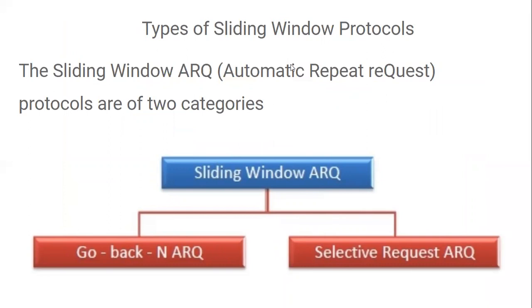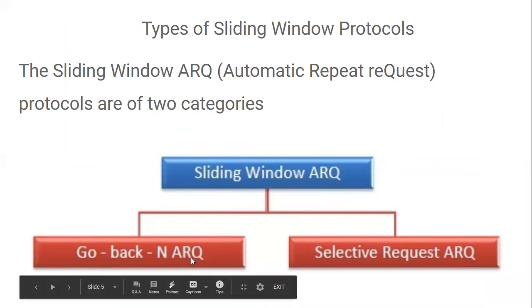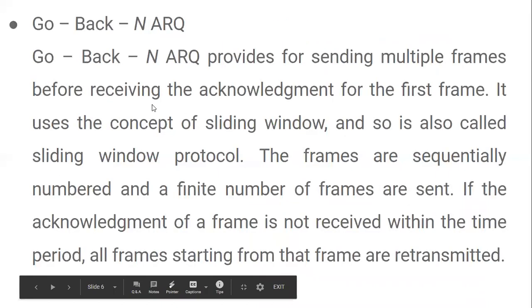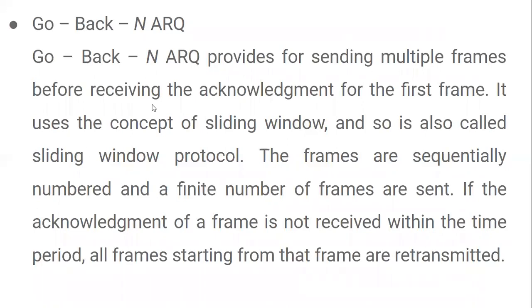There are two types of sliding window protocols using ARQ — Automatic Repeat Request: Go-Back-N ARQ and Selective Repeat ARQ. In Go-Back-N ARQ, the sender sends multiple frames to the receiver without getting any acknowledgement.